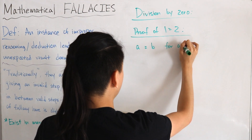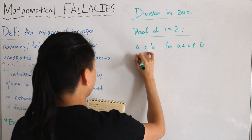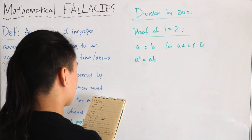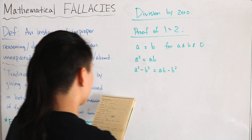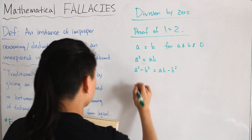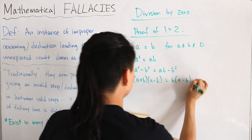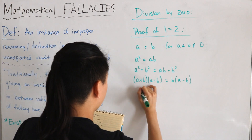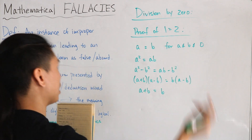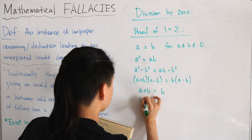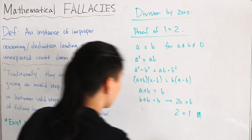Suppose a = b, where a and b are not zero. Multiply both sides by a, giving a² = ab. Subtract b² from both sides: a² - b² = ab - b². Factor the left as a difference of squares: (a + b)(a - b) = b(a - b). Divide both sides by (a - b), leaving a + b = b. Since a = b, substitute to get b + b = b, so 2b = b, and dividing both sides by b gives 2 = 1.